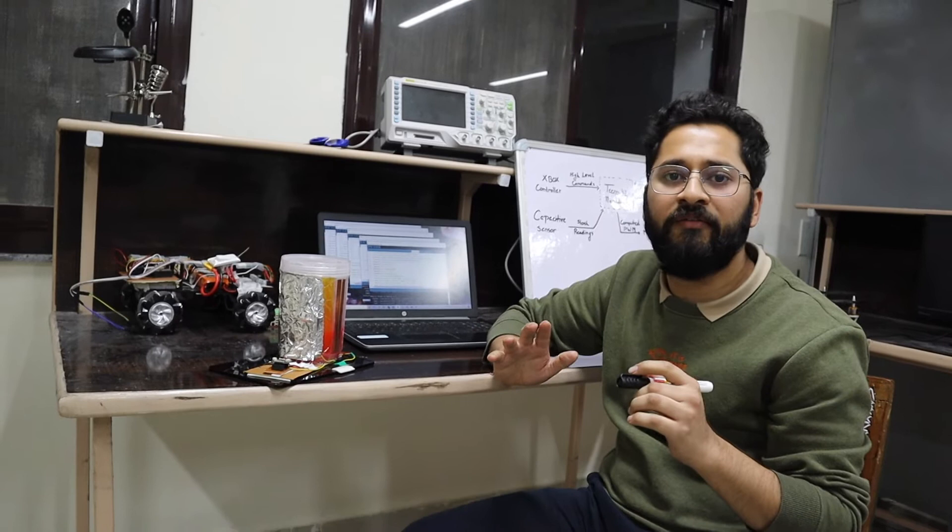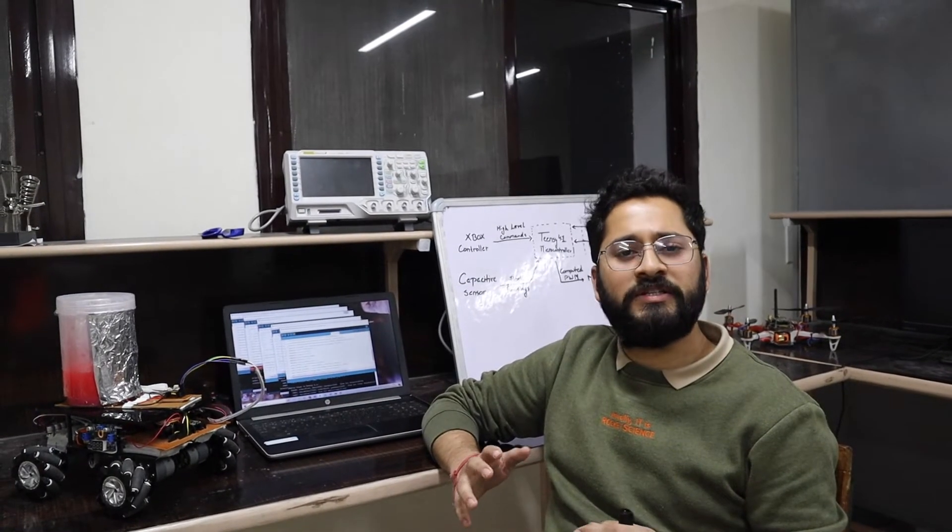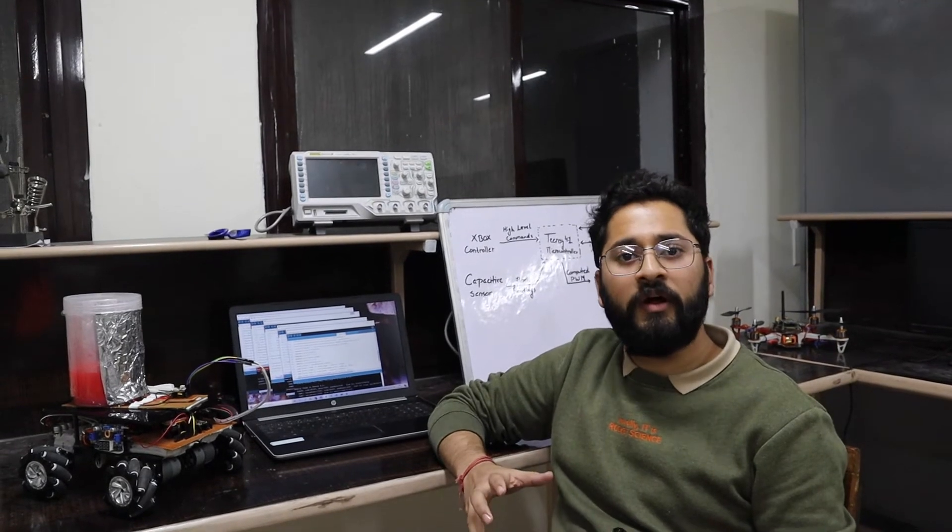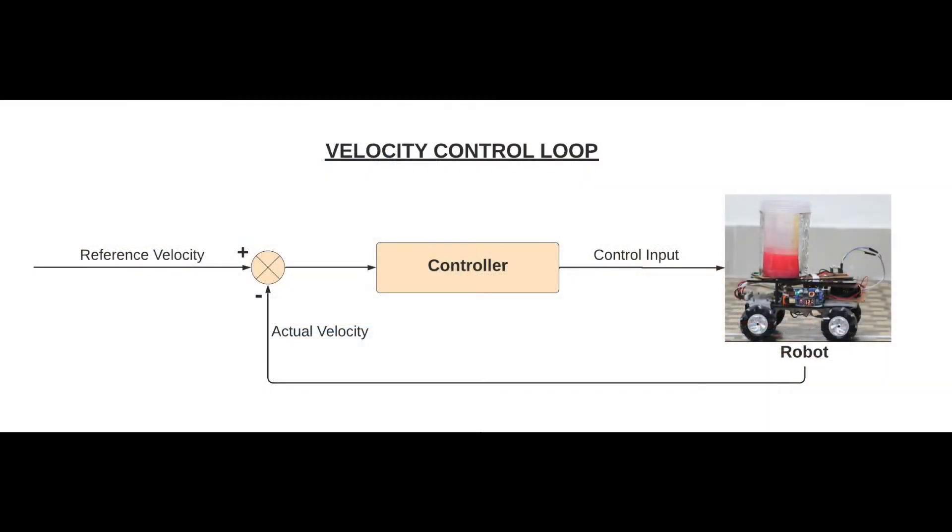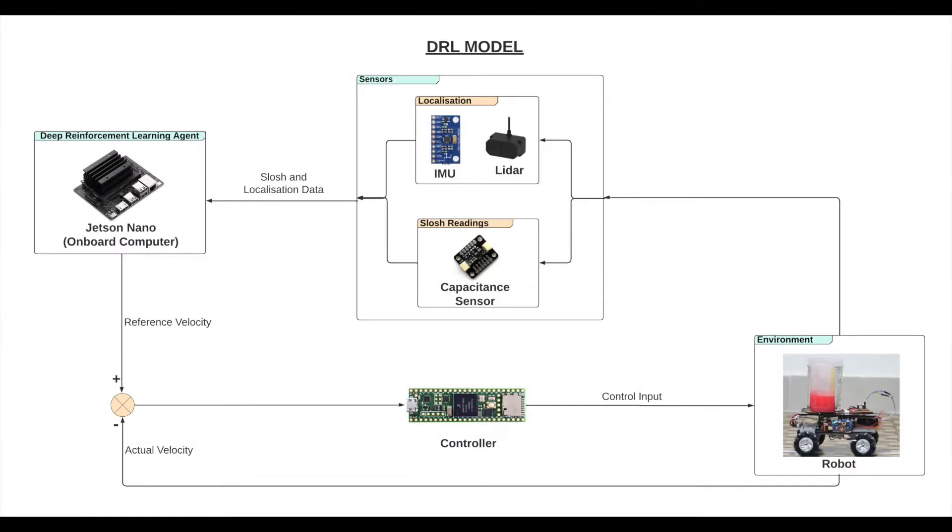Right now, we are running the robot with a set PWM, but we need to shift to a reference velocity. For that, we need to build a reliable velocity control loop. We are working on that. Once it is done, we will be ready to deploy the RL model which will give the reference velocities to minimize the slosh and the travel time for a given trajectory.